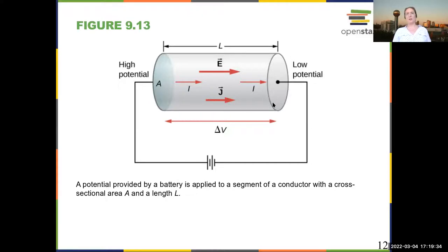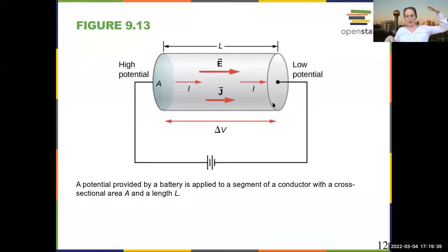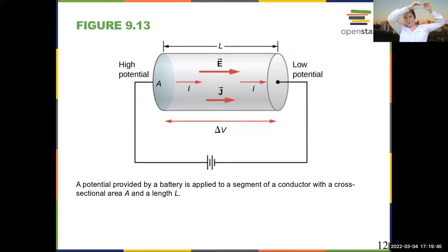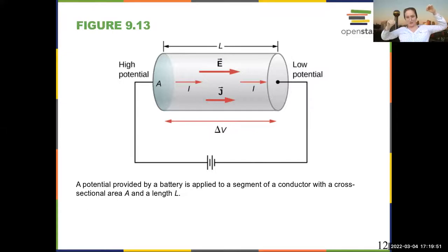If you think about the analogy of height and gravitational potential energy: when you're at high potential, you're at the top of the hill, and when you're at low potential, you're at the bottom of the hill. Your charges want to go to the area of low potential.